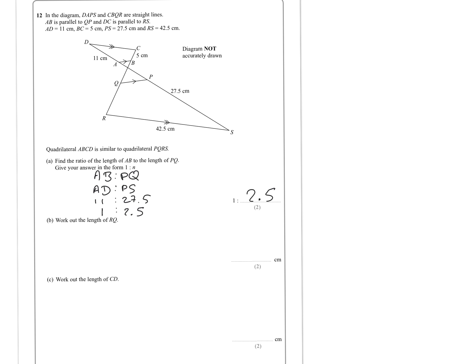Work out the length of RQ. So RQ here. Well, the equivalent length is that 5 over there. So it's 2.5 times bigger. So it's just going to be 5 times 2.5, which equals 12.5.